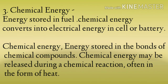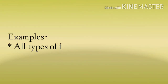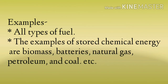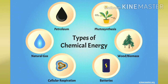Chemical energy क्या होती है? Chemical energy may be released during a chemical reaction — जब chemicals के आपस में chemical reaction होगी तब वो release हो सकती है, या फिर heat की form में भी release हो सकती है. इसके examples — all types of fuels: diesel, petrol, methane gas — उन सब में जो पहले से energy store रहती है उसको बोलते हैं chemical energy. The examples of stored chemical energy are biomass, batteries, natural gas, petroleum, and coal.